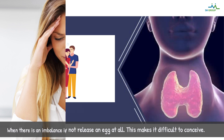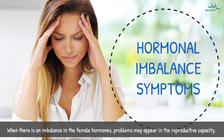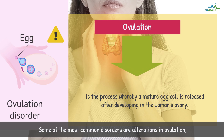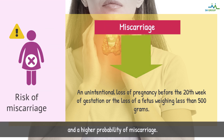When there is an imbalance in the female hormones, problems may appear in the reproductive capacity. Some of the most common disorders are alterations in ovulation, irregular menstruation, and a higher probability of miscarriage.